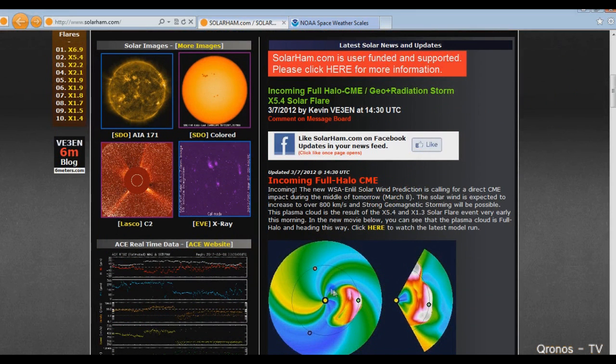This massive right here, this is the representation of the Sun, and this is a representation of the flare that came off the Sun, and this is Earth. As you can see, that is a direct hit to us.